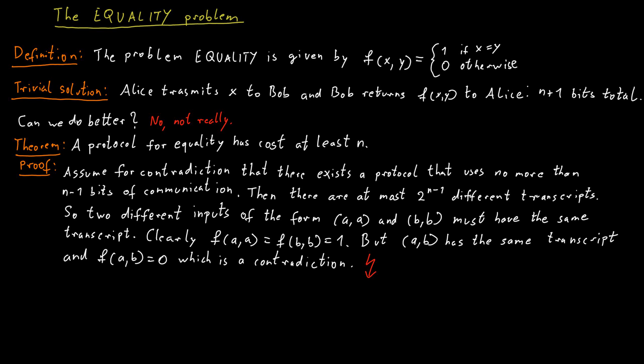In fact, we will later see through two different arguments that it is n plus 1. But that's a very minor difference. Essentially, the take-home message here is that for the equality function, the trivial solution is as good as it gets, and we can prove that there's nothing better you could possibly do.